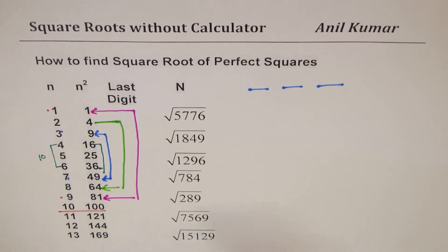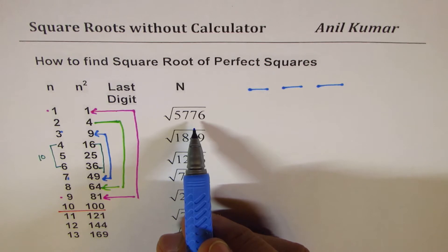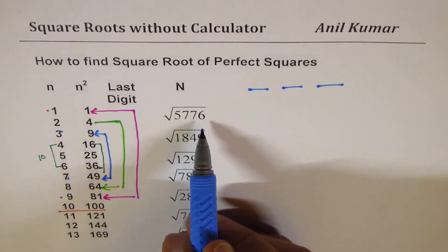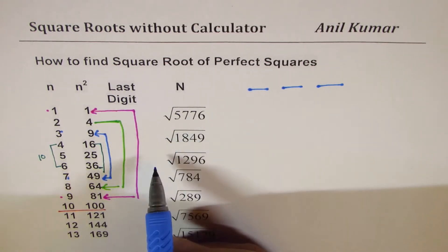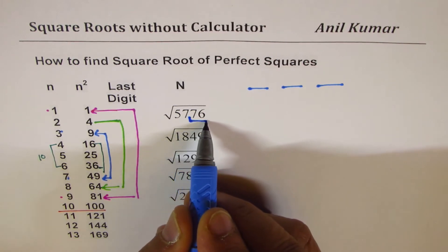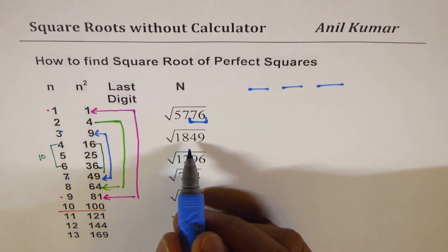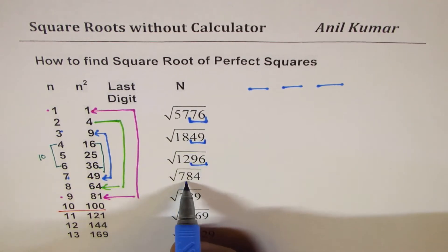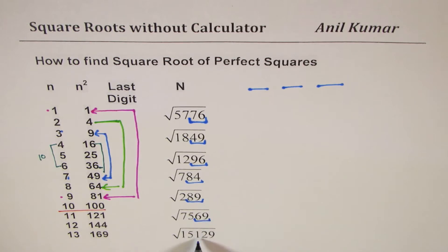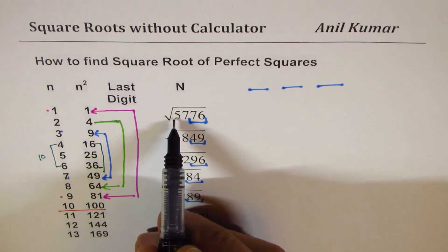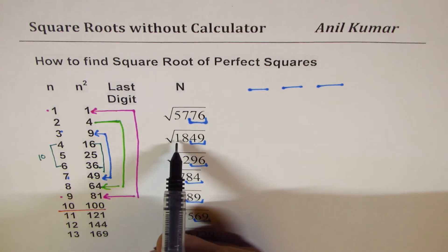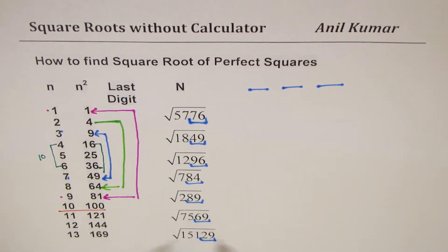Let me share the process and then we'll formalize the rules. The first step is to group your number into two groups. For example, take 5776. The first group is always two digits from the right — so 76 is your first group. The remaining digits form the second group — so 57. Similarly, 1849 gives groups 49 and 18.